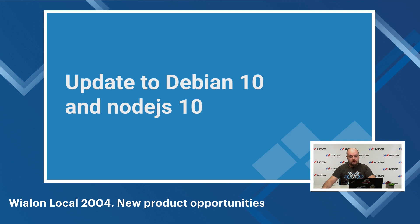If you want to upgrade Vialon Local from version 9.04 to 20.04, you can upgrade Debian and Node.js either before or after the local upgrade. Note that if you plan to upgrade to version 20.04 from 18.04 or earlier versions, you need to first upgrade to version 9.04 following all recommendations in our documentation, and only after that start with the Debian and Node.js update.